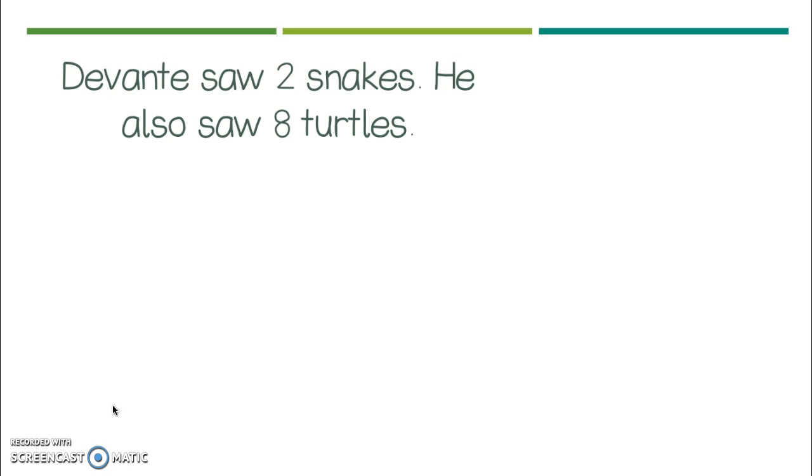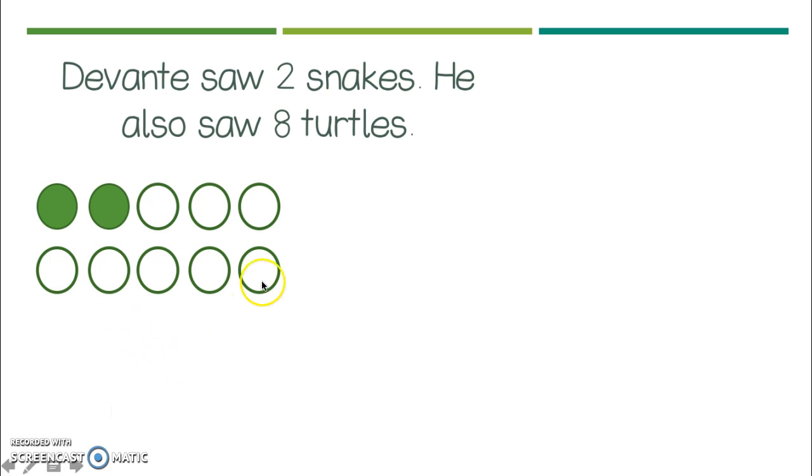You can draw it with me or you can just chill. It's up to you. It says, Devante saw two snakes. I'm going to go ahead and draw two. One, two. I want to show that he saw eight turtles. And I want to draw my picture a little bit differently. So I'm going to go ahead and not color those circles in as I keep drawing. So let's see, eight. One, two, three. Oh, it looks like how many animals did he see all together, friends? He saw 10 because I see my eight. Nine, 10. Excellent.